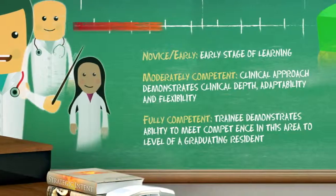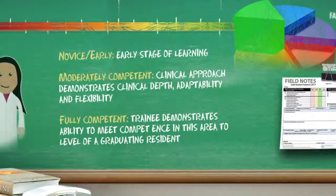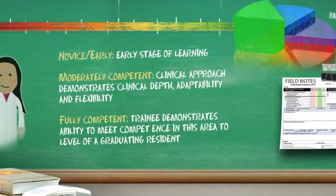The second change is the overall rating of the learner. We ask the preceptor to rate the learner based on their progression down an anticipated learning continuum. For example, a first-year trainee in the first one to two months would usually be in a novice or beginner stage, and this would be normal and expected, but not appropriate after 10 months of residency.